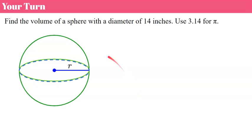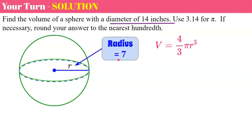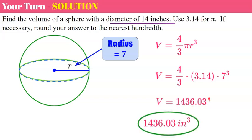Now find the volume of a sphere with a diameter of 14, using 3.14 for pi. Pause and come back when you're done. Welcome back. Here's the trick — diameter of 14 means the radius is half of that: 7. Using the formula: 4/3 times 3.14 times 7 cubed. On the calculator: 7 times 7 times 7 times 3.14, times four, divide by three. You should get 1,436.03 inches cubed.